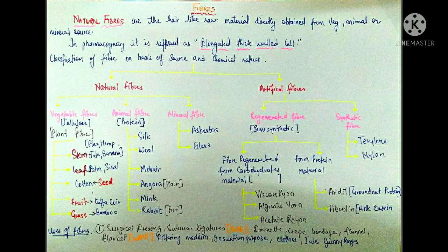Coming to the third type is mineral fiber. Mineral fibers include asbestos and glass. Both asbestos and glass are naturally occurring mineral fibers.